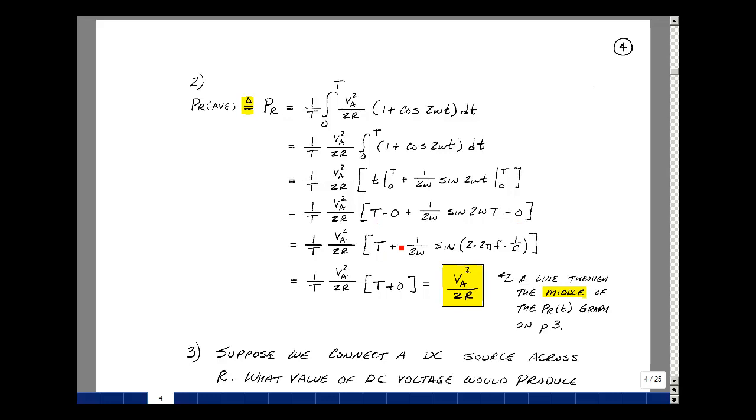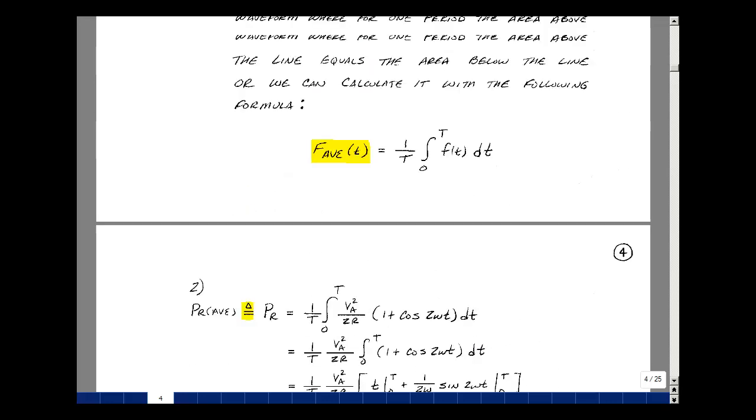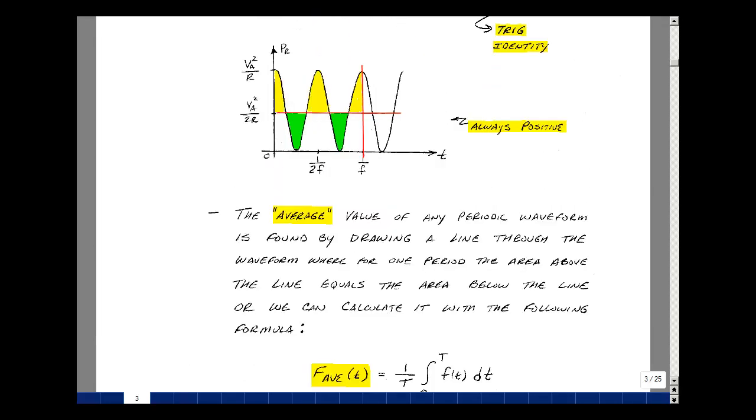Cleaning this up, I've got t, 1 over 2 omega, sine of 2 omega t. You could write omega as 2 pi f. You can write t as 1 over f. That causes these two to cancel. And I wound up getting 4 times pi. 2 pi is 360 degrees, but we're doubling that, so 720. But that's also equal to 0. What I get from this expression is just t. The t's cancel, and I get v sub a squared over 2r. If you look back at the previous page, that was right through the middle of the waveform.